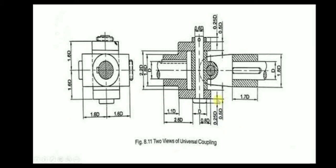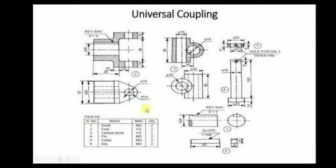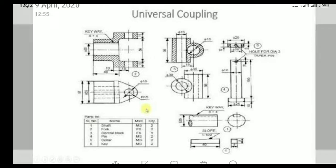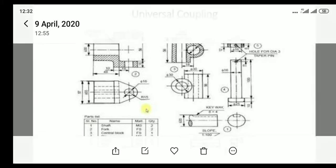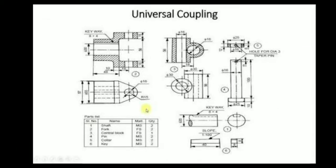So if you disassemble the given universal coupling it appears as this diagram. So first one, the two forks we have to draw in the left side which is at the left corner, and it is front view and the down one is the top view.